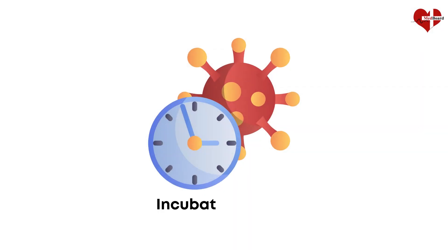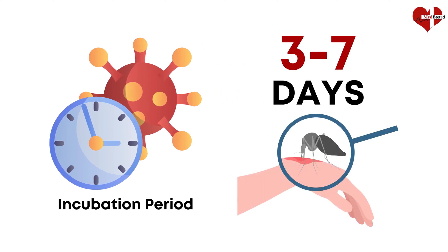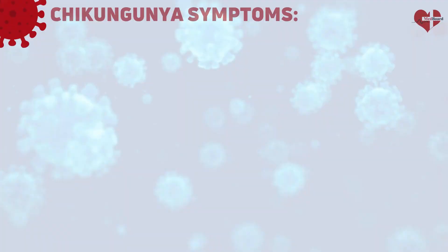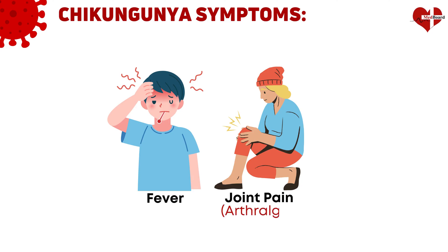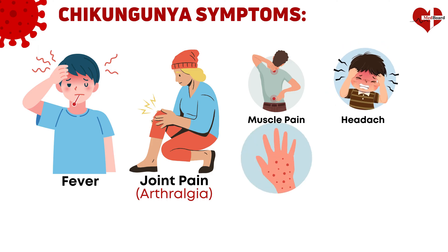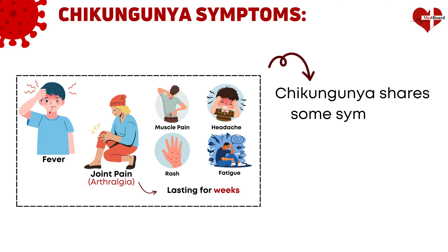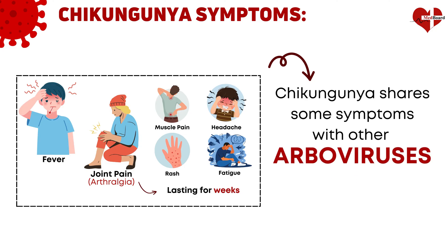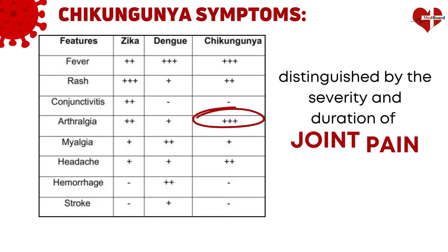The incubation period for Chikungunya is typically three to seven days after a mosquito bite. The virus primarily causes a sudden onset of fever and severe joint pain, known as arthralgia. Other common symptoms include muscle pain, headache, rash, and fatigue. The joint pain can be debilitating, lasting for weeks or even months in some cases. Though Chikungunya shares some symptoms with other arboviruses like Dengue and Zika, it is distinguished by the severity and duration of joint pain.